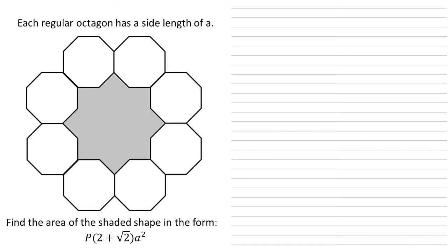Each regular octagon has side lengths a. We need to find the area of the shaded shape in the form P(2 + √2)a².